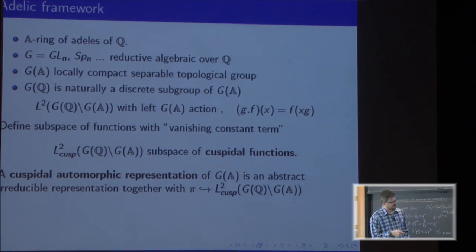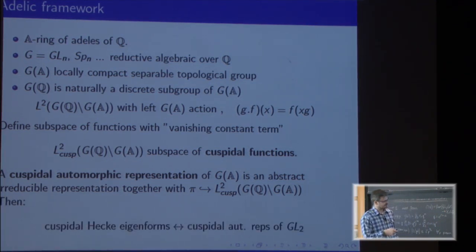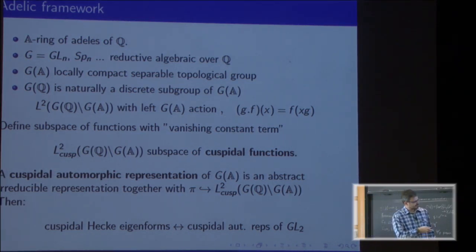Using this abstract language, cuspidal Hecke eigenforms that we saw correspond to cuspidal automorphic representations of GL(2). But we can clearly see that GL(2) can be replaced with something else now.